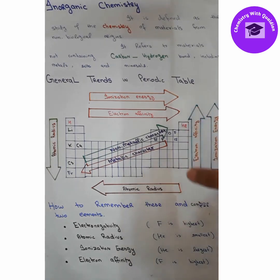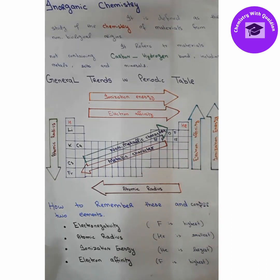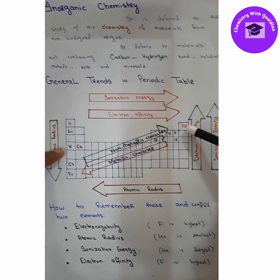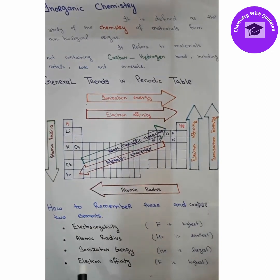The noble group elements have a complete octet, so their electrons are tightly bound and it is very difficult to remove electrons from them. Helium has the highest ionization energy. Elements close to helium have high ionization energy, while those far from helium have low ionization energy. For example, oxygen — close to helium — has high ionization energy, and potassium — very far from helium — has very low ionization energy.